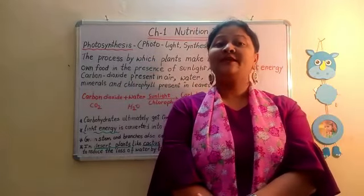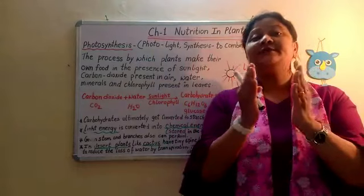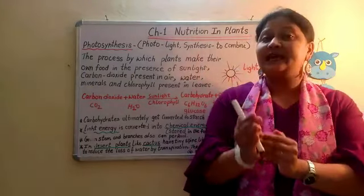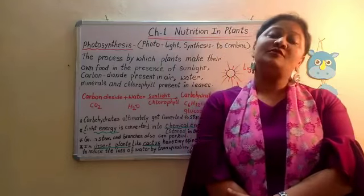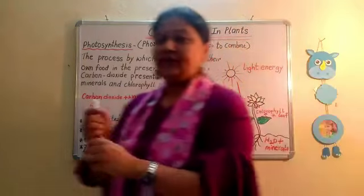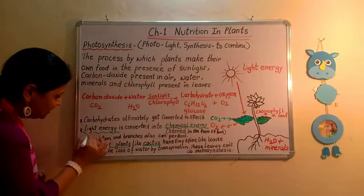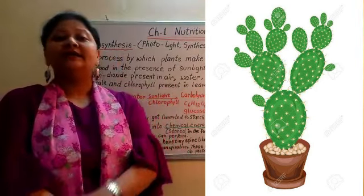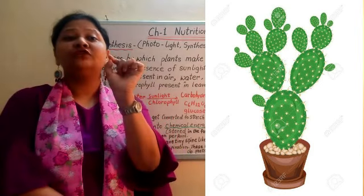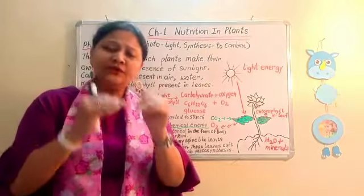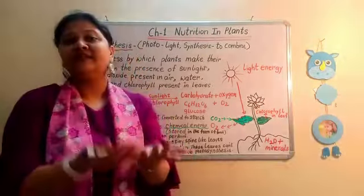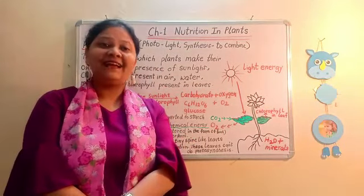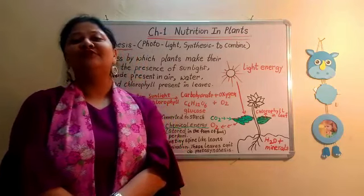Apart from green leaves, in some plants the green stem and green branches also contain chlorophyll and perform photosynthesis. For example, take the cactus plant — the desert plant. In cactus, the leaves are modified into tiny spines to reduce the loss of water through transpiration. In that case the leaf is not able to perform photosynthesis, so the green stem and branches of the desert plant like cactus carry out the process of photosynthesis instead.